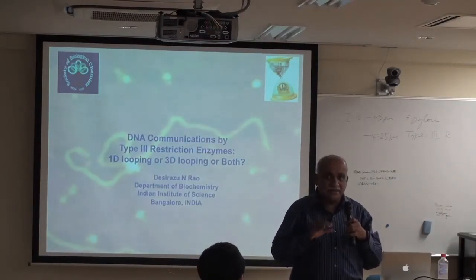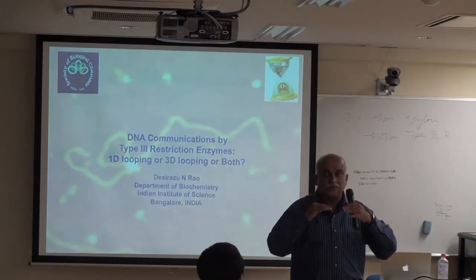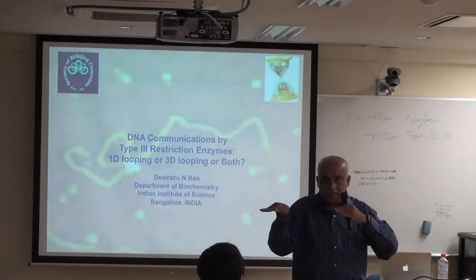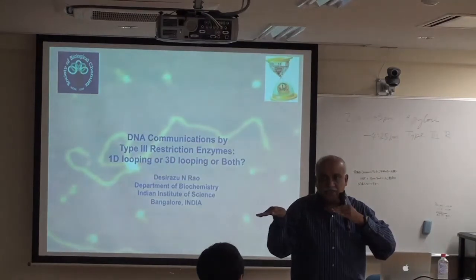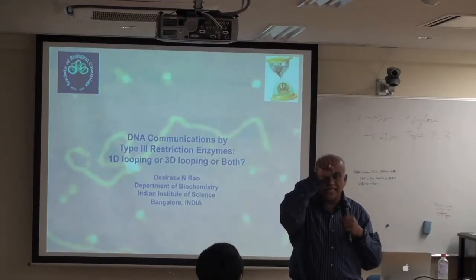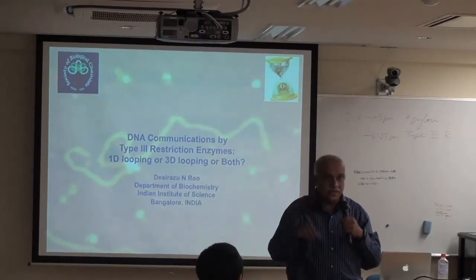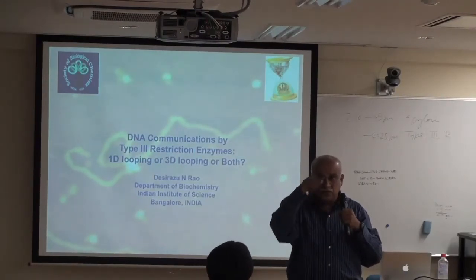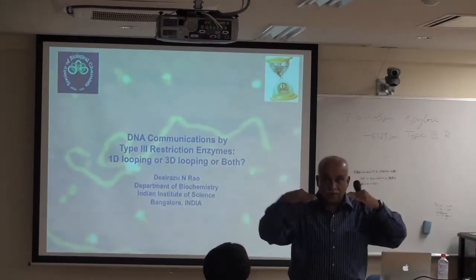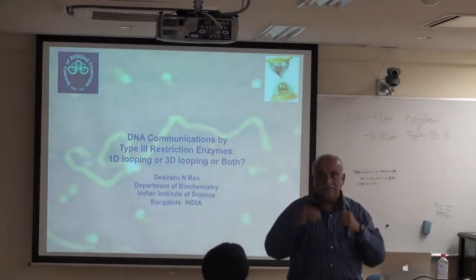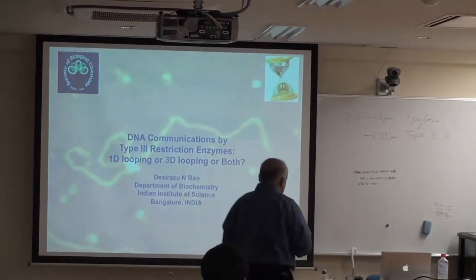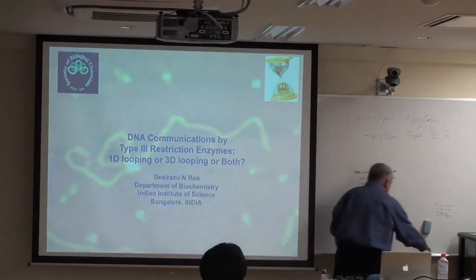If the two sequences are in the same orientation, the enzymes will not cleave DNA. A circular plasmid with one site shows no cleavage; with two sites in the same orientation, nothing happens. But if the sites are in opposite orientation, cleavage occurs. They came up with a very elegant hypothesis.